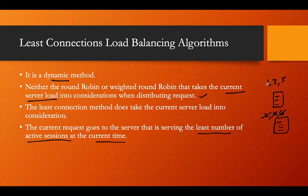Server one, however, has only executed one request and still has active sessions. When the seventh request arrives, least connections will send it to server two — because server two has zero active sessions right now, while server one still has two active sessions, meaning server one is busy. So request number seven goes to server two.